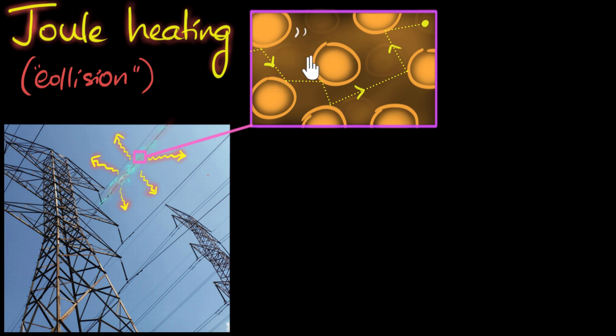And as a result, the atoms start shaking. They start jiggling. And now you can imagine what would happen if we had lots and lots of electrons going and colliding with these atoms. These atoms start jiggling a lot. And whenever the atoms of any material start jiggling, that's when the material heats up.